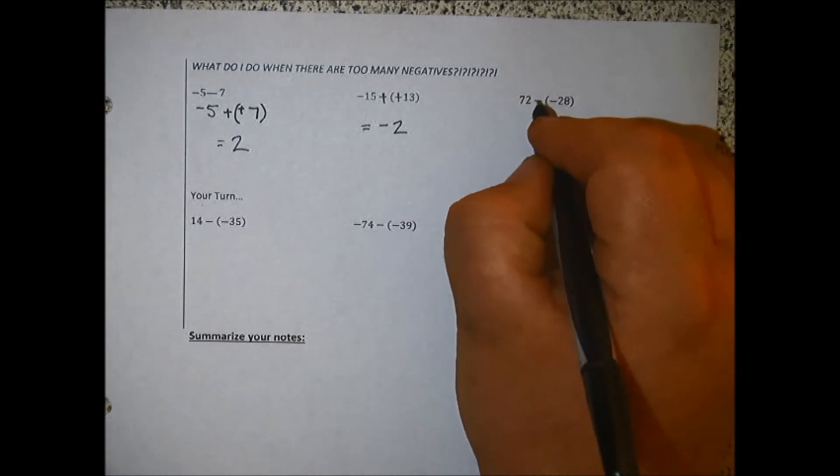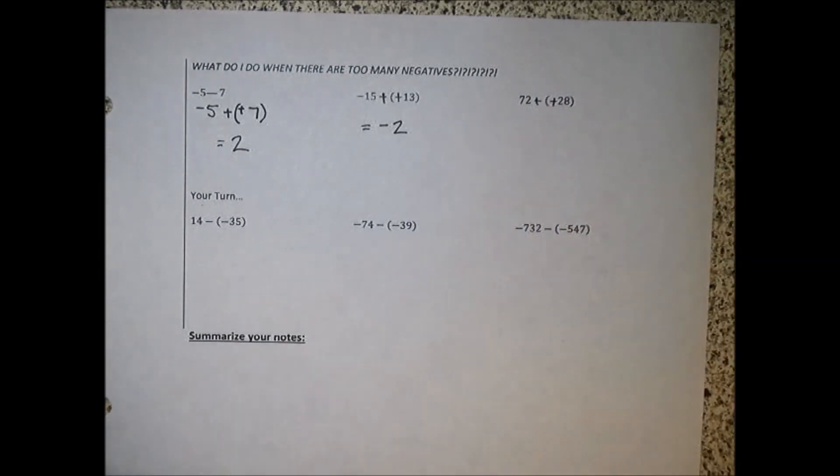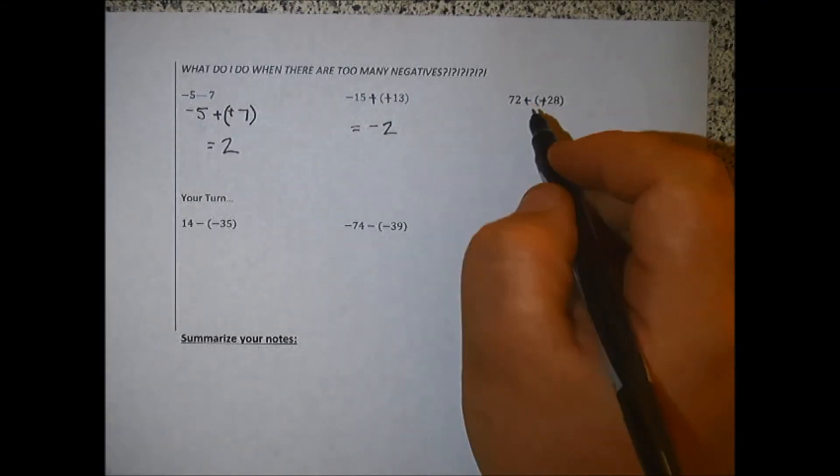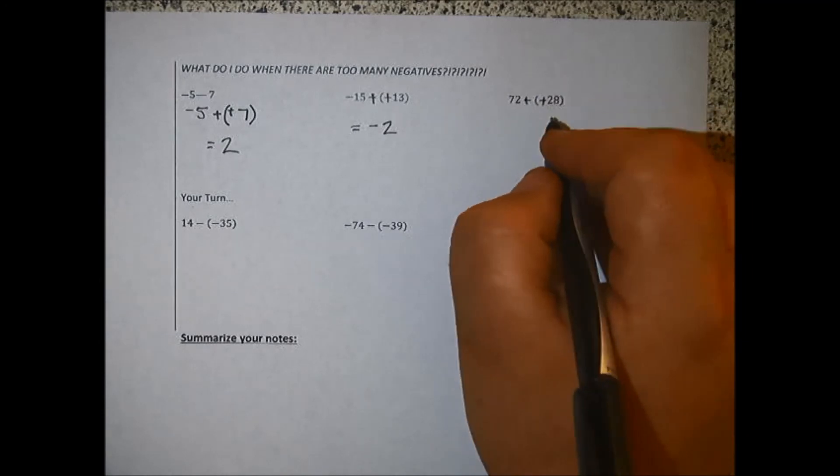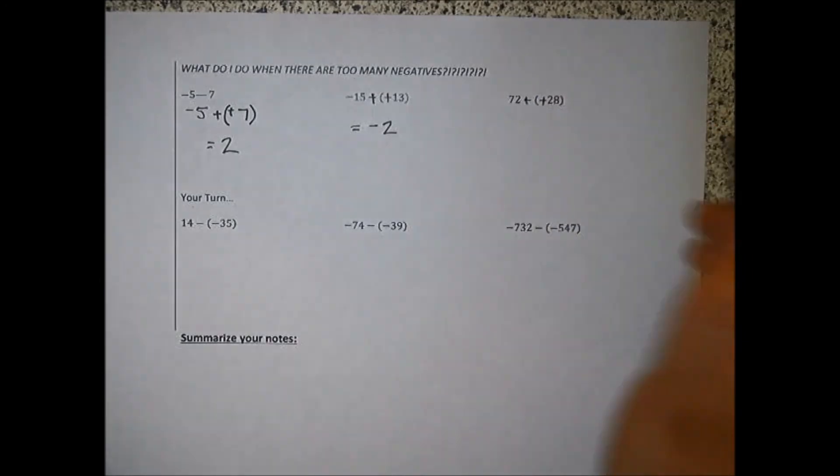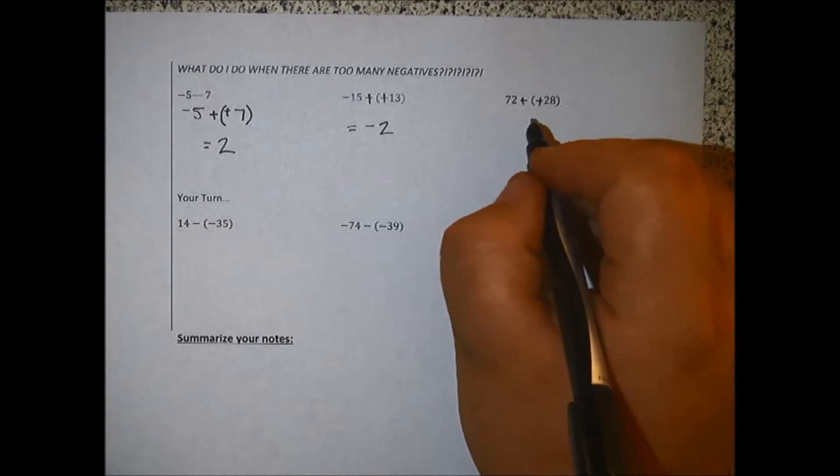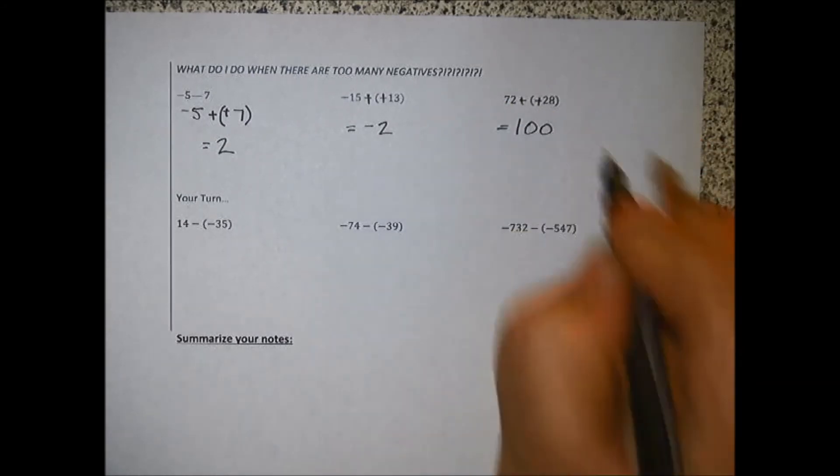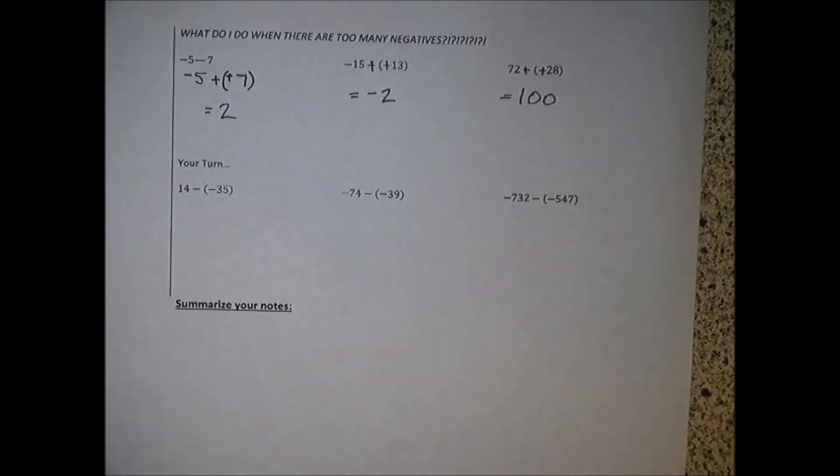Same thing here, we get that bam bam action going, and it makes this problem actually pretty easy. 72 plus 28. If you don't know what it is, use a different method. 8 plus 2 is 10, 7 plus 2 is 9, add that 1 from the 10, and we get 100. Go ahead and pause the video and try the next few.